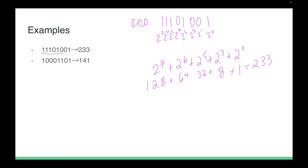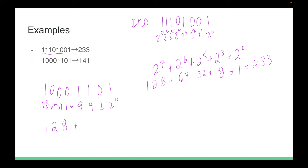Similarly for 10001101: the values are 128, 64, 32, 16, 8, 4, 2, 1. We have a 1 at 128, zeros at 64, 32, 16, a 1 at 8, a 1 at 4, a 0 at 2, and a 1 at 1. So 128 + 8 + 4 + 1 = 141.